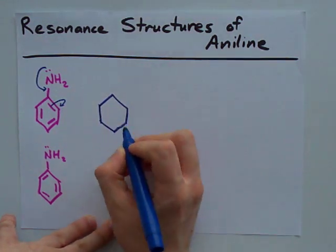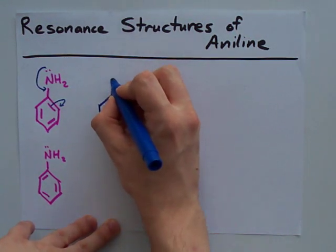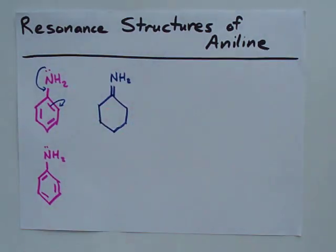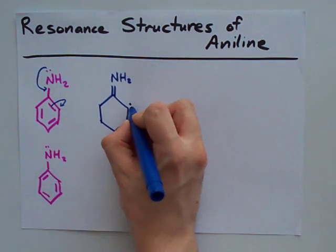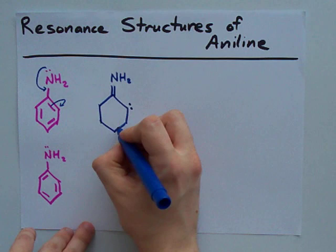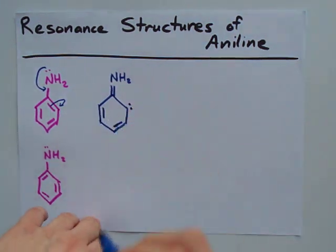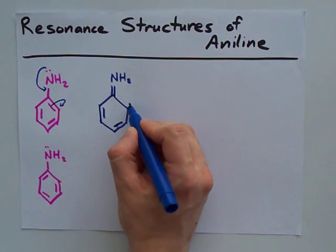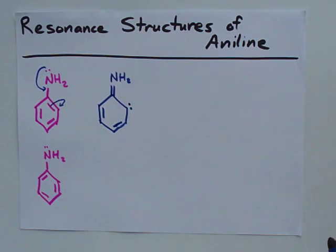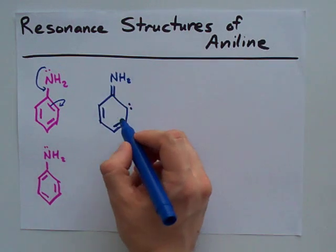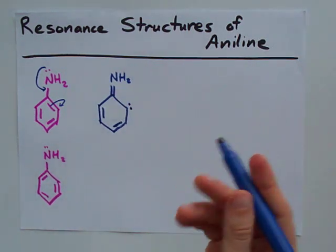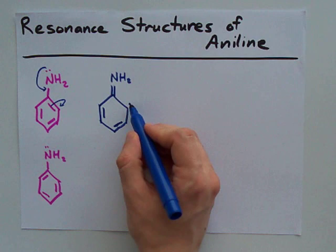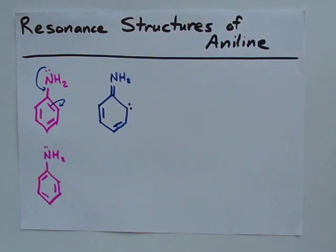We've got our benzene ring, with our nitrogen connected here by a double bond, and we have our lone pair of electrons sitting on this carbon. The other carbons are unaffected. The electrons have been pushed to this carbon, which still satisfies the octet rule — it's connected to this carbon, this carbon, a hydrogen, and this lone pair. This is a resonance structure, and we will explore that a little further.